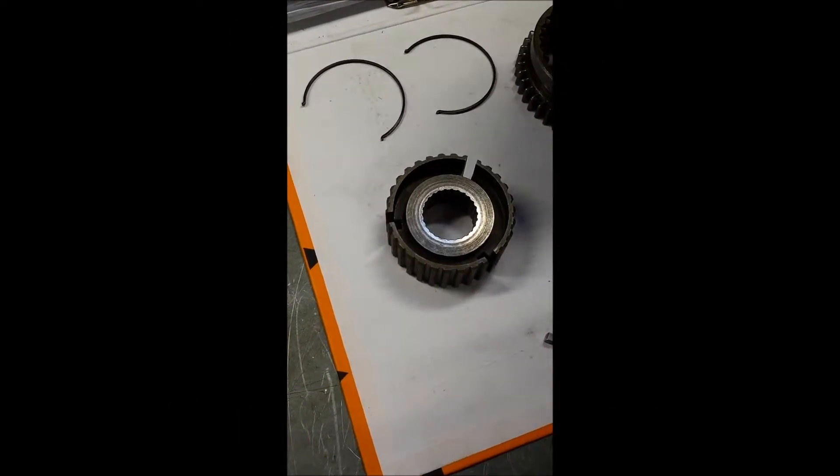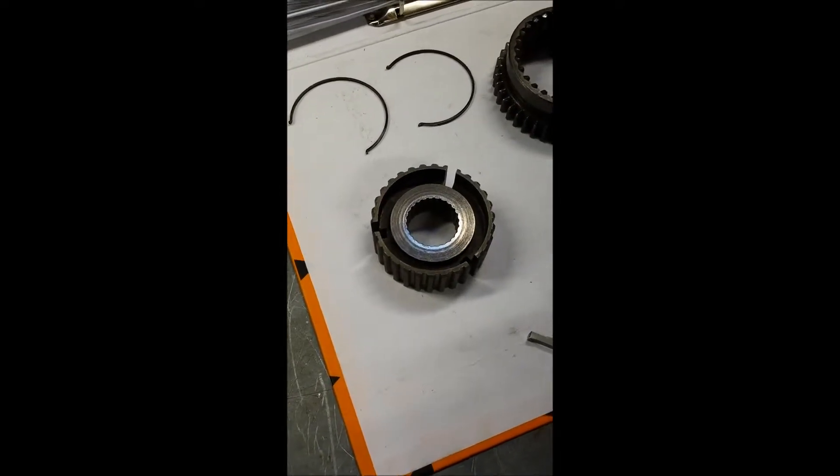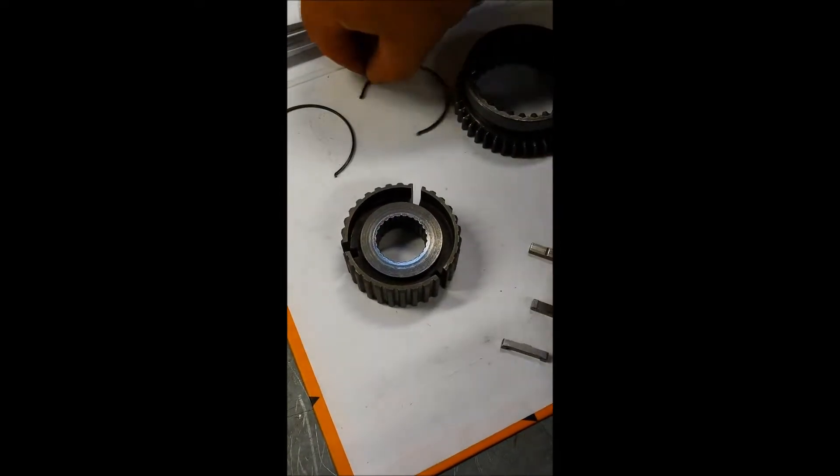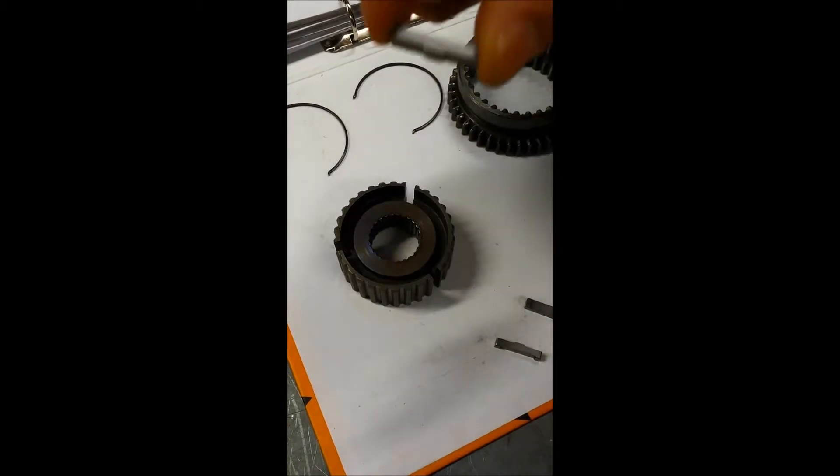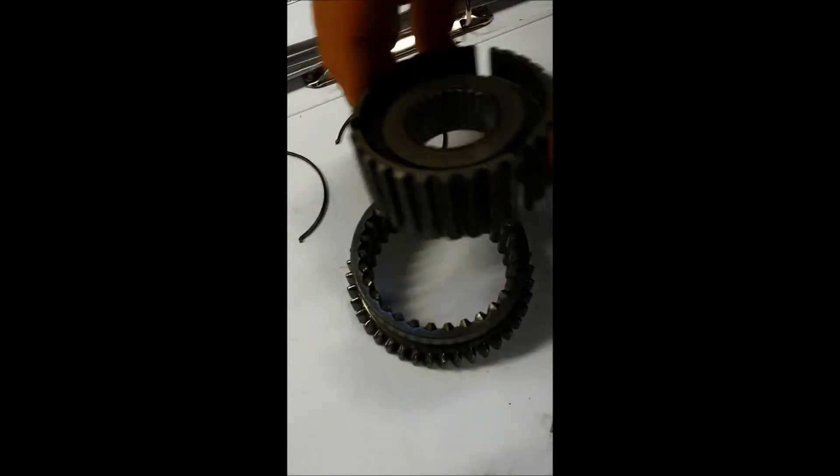Okay, just a short video showing you how to put together the synchro hub unit with the springs and the little dogs. Okay, there we are, little dogs. So first of all, you get the sleeve. Just come back a bit.